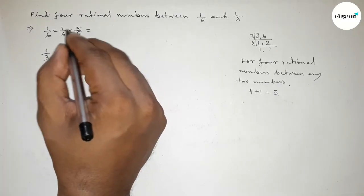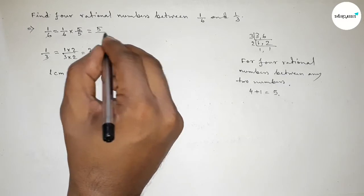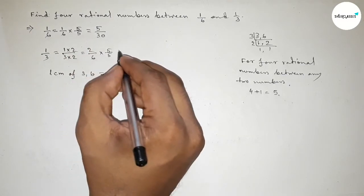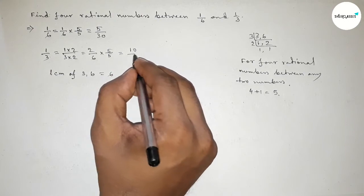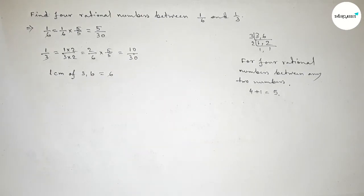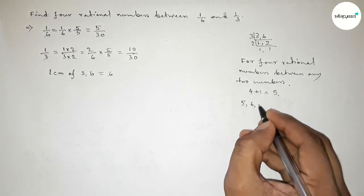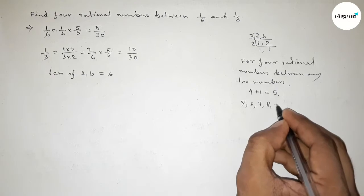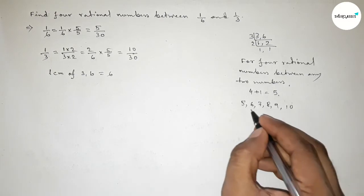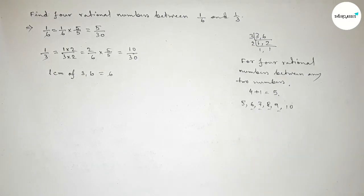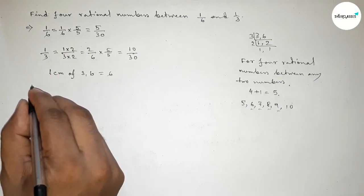Now this is 5 over 30 and here 10 over 30. Between 5 to 10, we can get four natural numbers. So here write down all the natural numbers, and these are the four natural numbers.